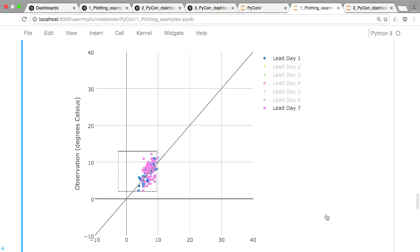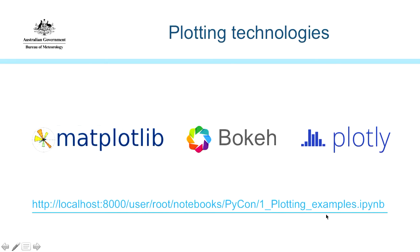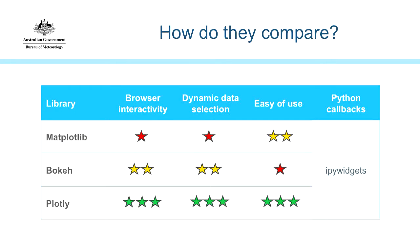Going back to our slides — how do these three compare based on our criteria? We found Matplotlib to not be good at browser interactivity and dynamic data selection, though it's fairly easy to use. We found Bokeh to be pretty good at interactivity but not easy to use. And we like Plotly, obviously.